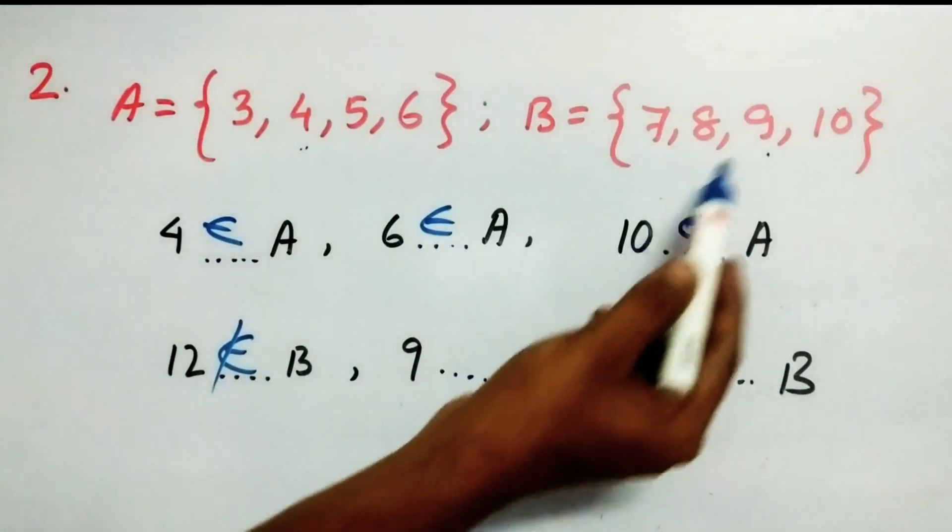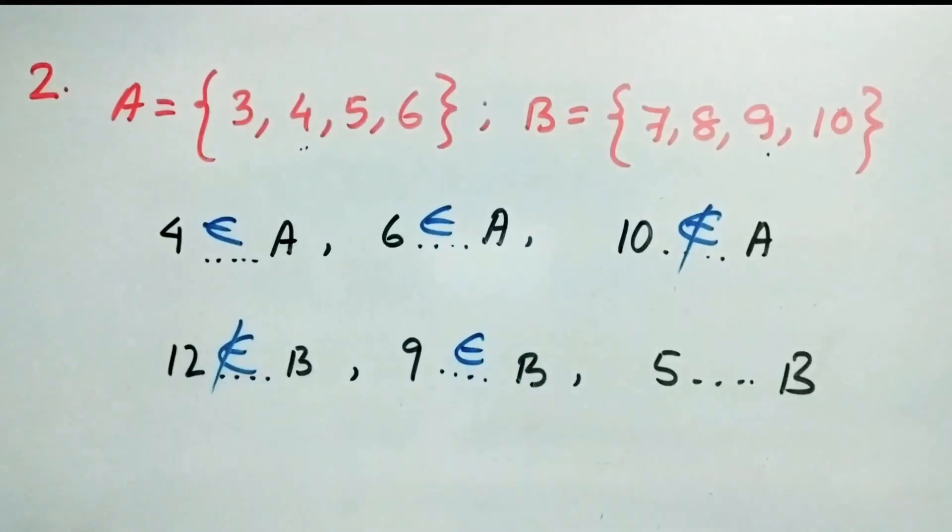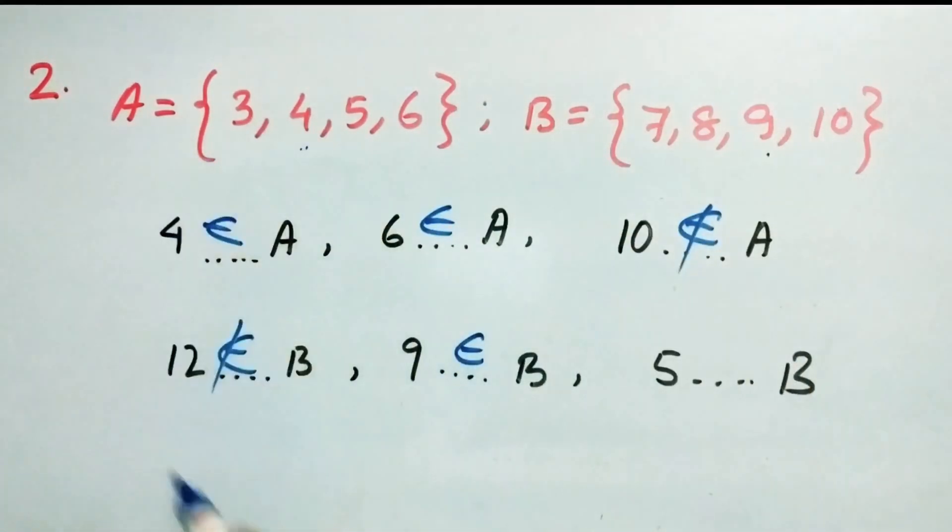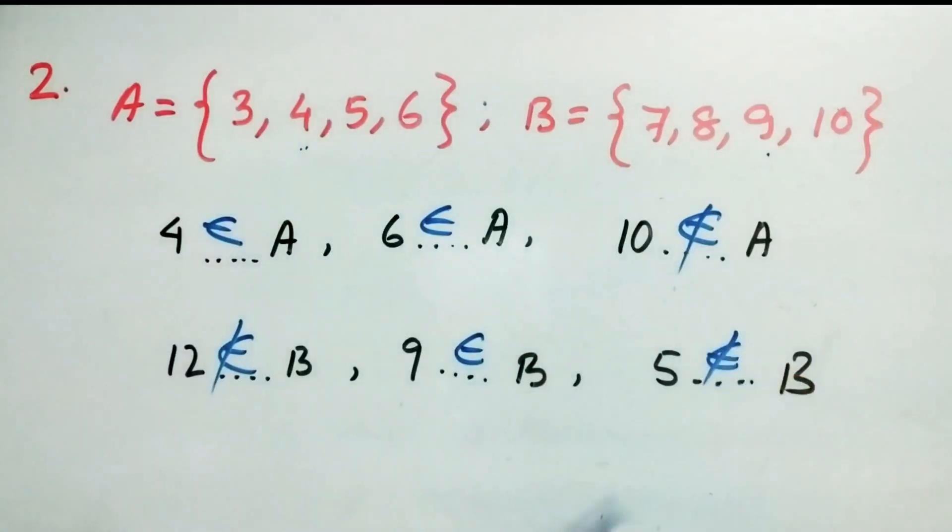And 9, 9 is here. So 9 belongs to B. And here 5. 5 is not there. 5 is here. So obviously we can say that it does not belong to B.